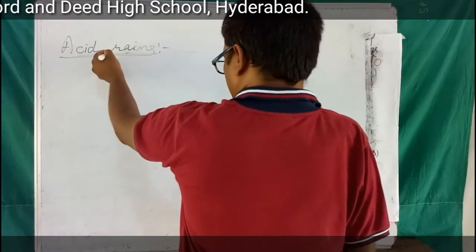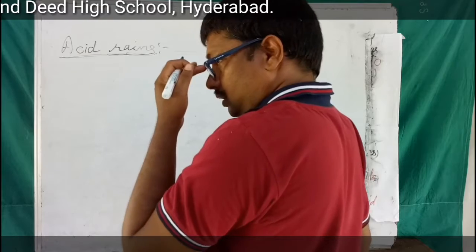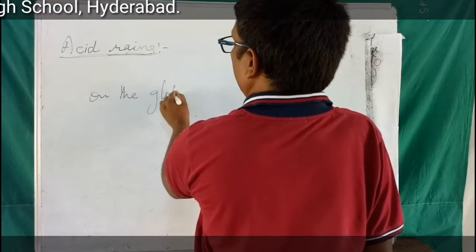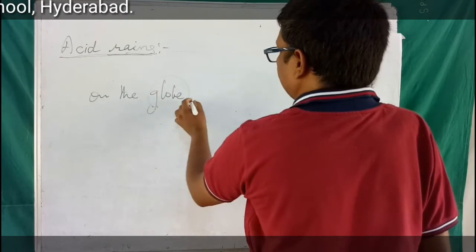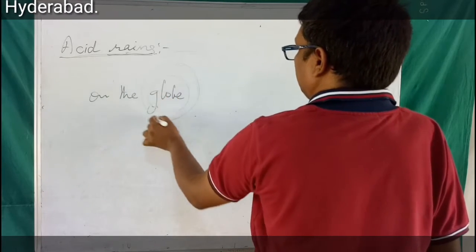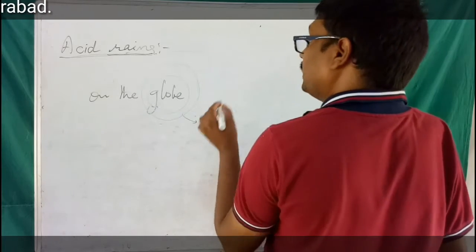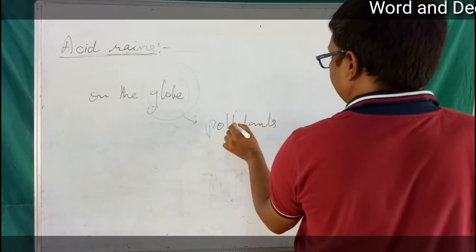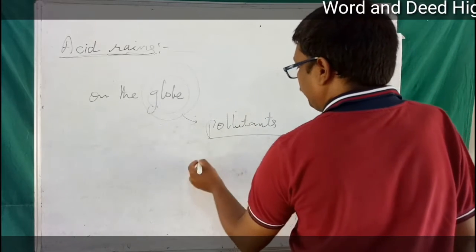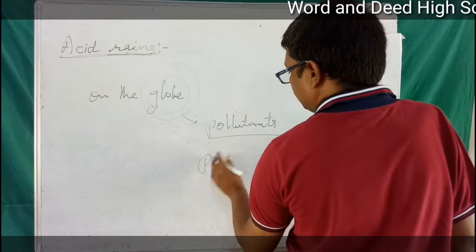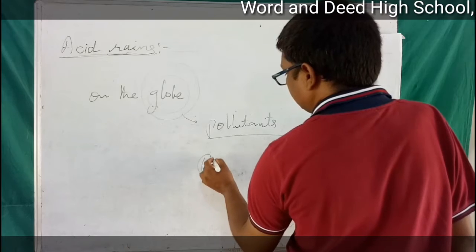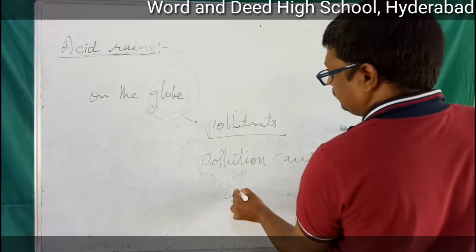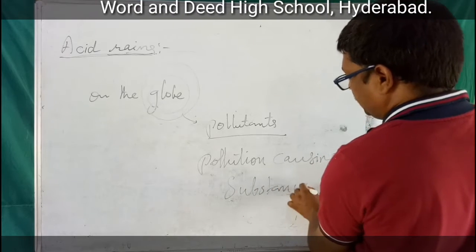Acid rains — you know, on the globe, our globe is bounded or enveloped with atmosphere. In that, there are so many pollutants. What are pollutants? Pollutants are pollution-causing substances.